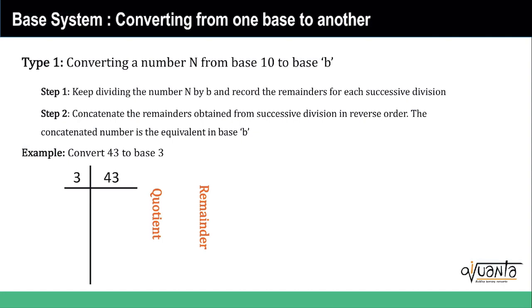If I was to concatenate 1, 2, and 3 in reverse order, I will get 321. So you concatenate your remainders in the reverse order, and the number thus obtained is the number in base b.